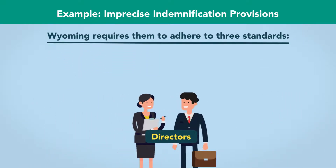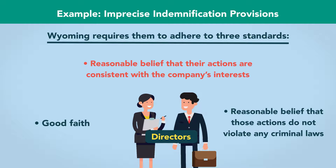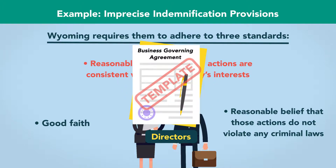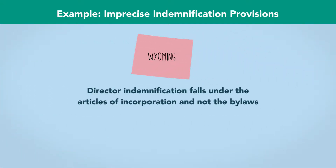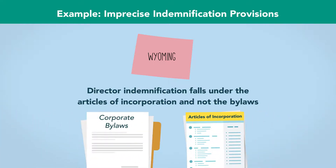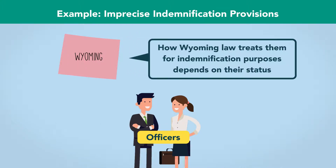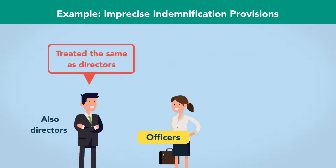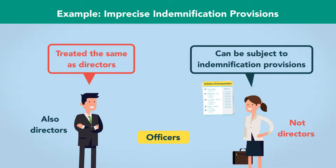For corporate directors, Wyoming requires them to adhere to three standards: good faith, reasonable belief that their actions are consistent with the company's interests, and reasonable belief that those actions do not violate any criminal laws. Although some of these standards are similar to those of the template provision, the template makes no mention of the duty of good faith. Another problem is that in Wyoming law, director indemnification falls under the Articles of Incorporation and not the bylaws. For corporate officers, how Wyoming law treats them for indemnification purposes depends on their status. Officers who are also directors are treated the same as directors, while officers who are not directors can be subject to indemnification provisions in the Articles of Incorporation, the bylaws, or a separate resolution by the Board of Directors.